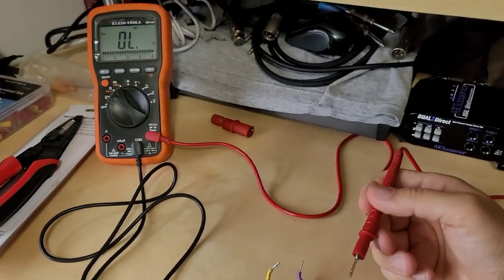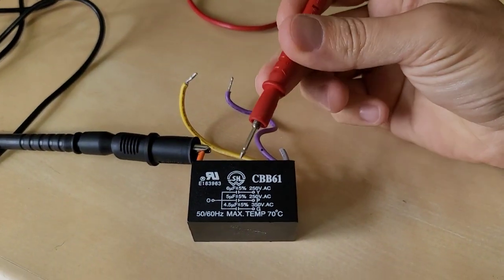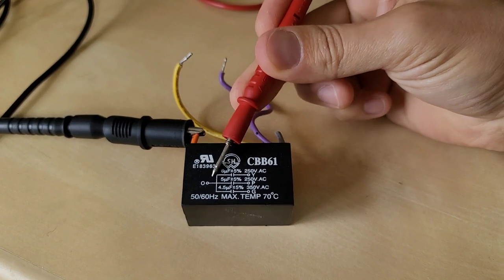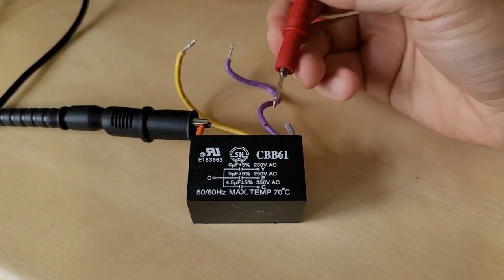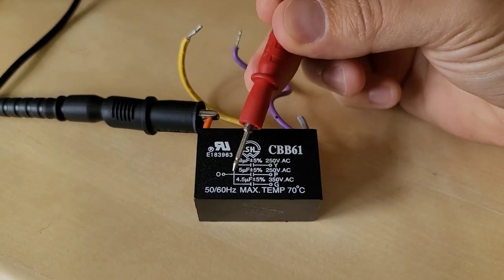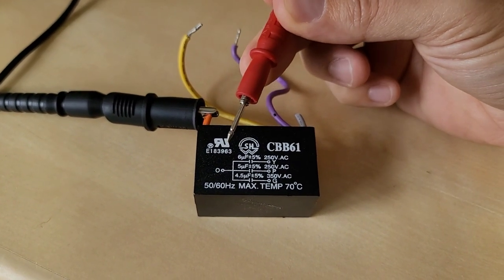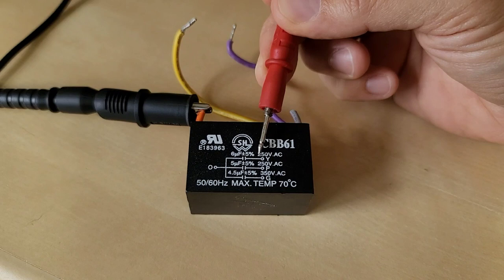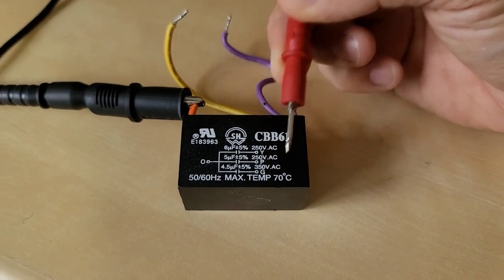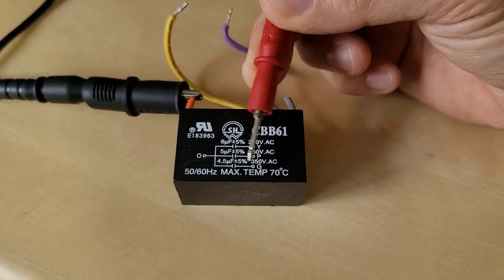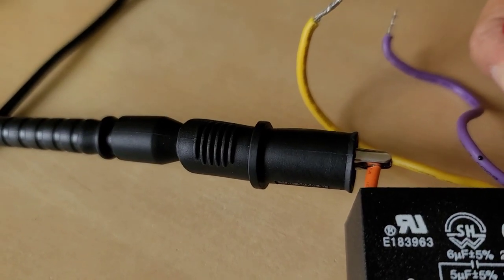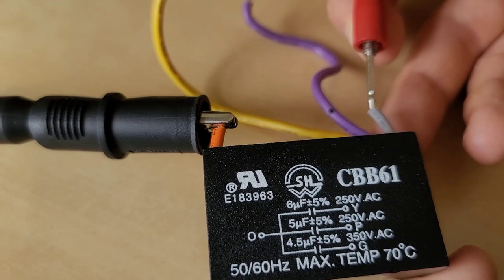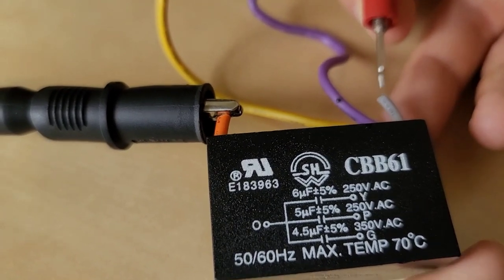I'm going to test the capacitor. I have it set to ohms. It's going to beep. Now capacitors do not allow DC voltage to pass across them but they will allow AC voltage to pass across them. The orange is the common point between all of the capacitors inside. That's three capacitors in one unit here. So from orange to gray, I'm not going to get any kind of reading and that's good. That means that capacitor is good.